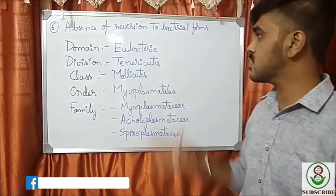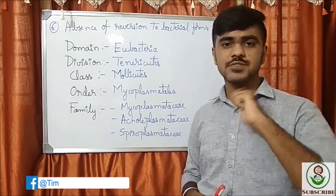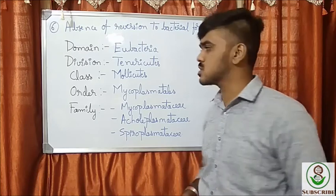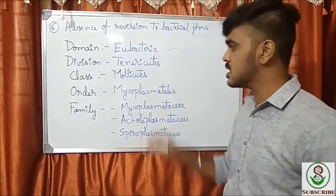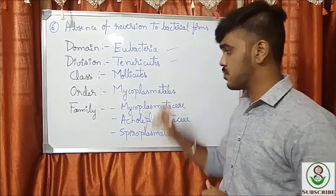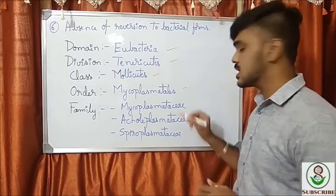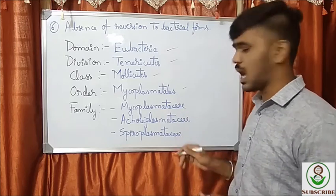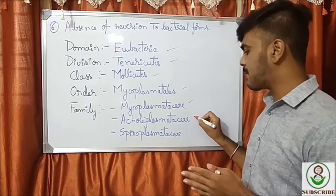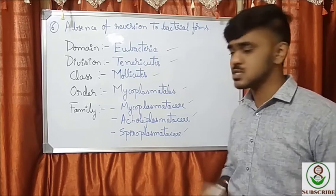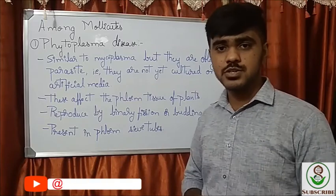Another character is absence of reversion to bacterial forms — they can't gain rigid cell walls. The classification: domain is Eubacteria, division is Tenericutes, class is Mollicutes, order is Mycoplasmatales, and important families include Mycoplasmataceae, Acholeplasmataceae, and Spiroplasmataceae.